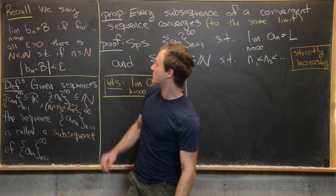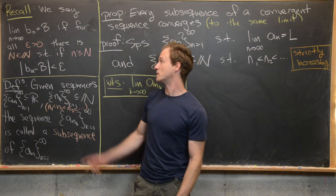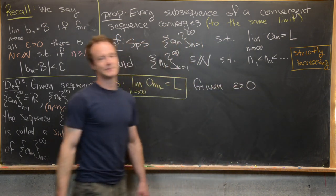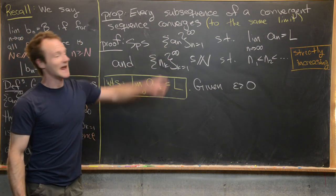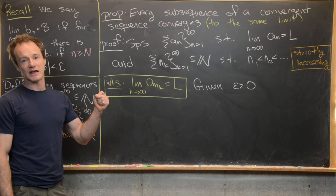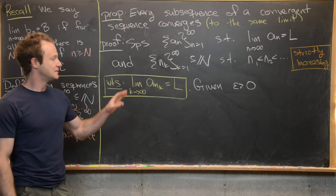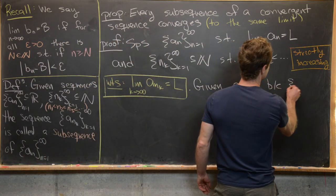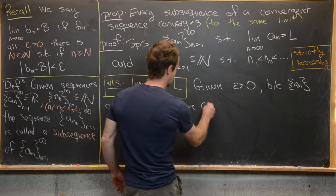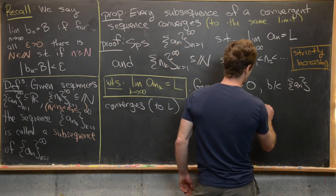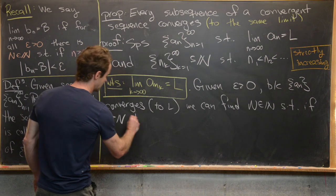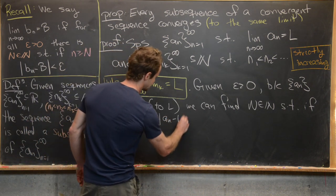We'll use the epsilon-N definition of convergence. Given some arbitrary epsilon greater than zero, because a_n converges to L, we can find a capital N which is a natural number such that if n is bigger than capital N, then |a_n - L| is less than epsilon.